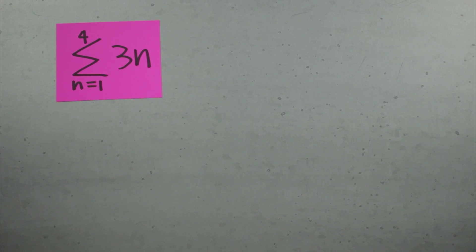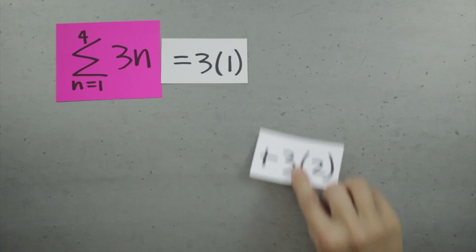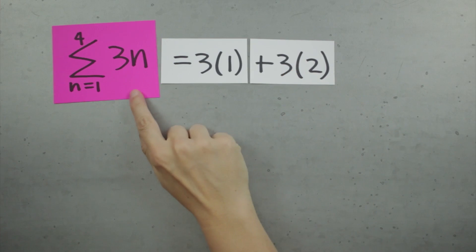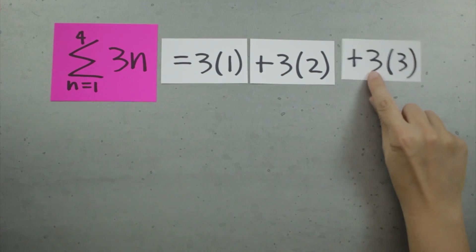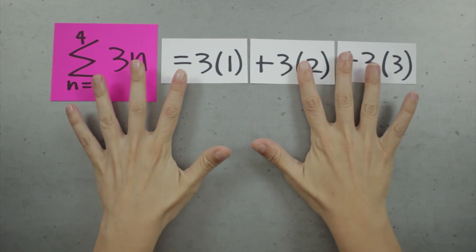In other words, if we want to expand this sum, we plug n equals 1 into 3n, and we keep going, adding and plugging in n equals 2, n equals 3, and n equals 4, which is where we stop.